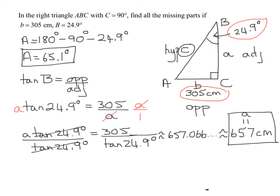Hypotenuse C. So what trig function involves angle B, the opposite, and the hypotenuse? That is the sine function. So I know the sine of angle B, which is 24.9 degrees, is opposite, which is 305, over hypotenuse, which is C.